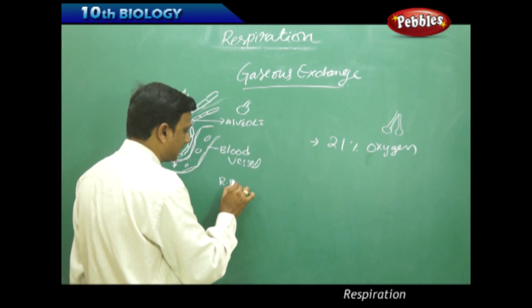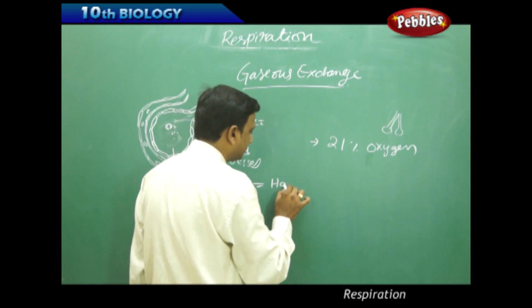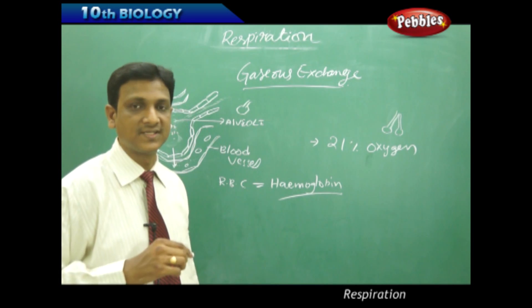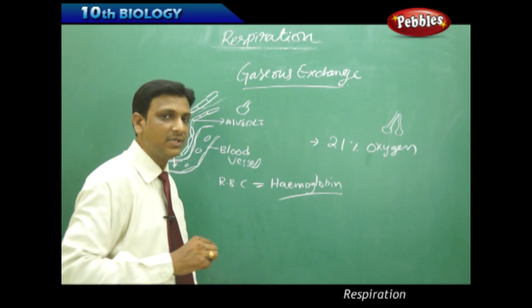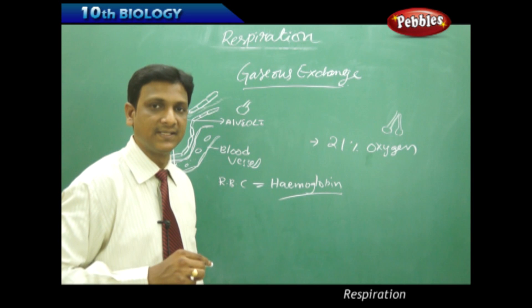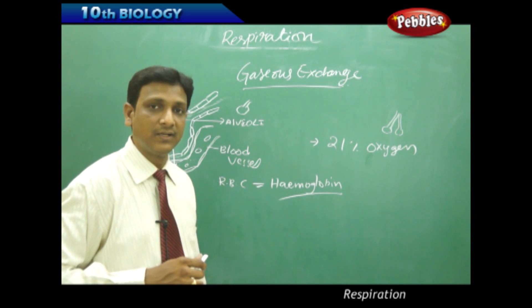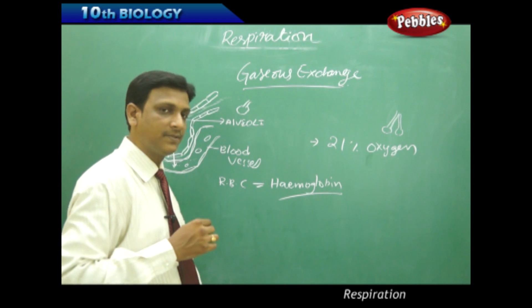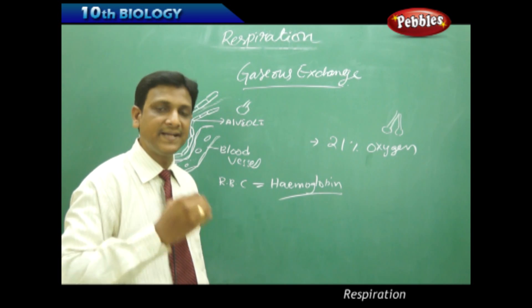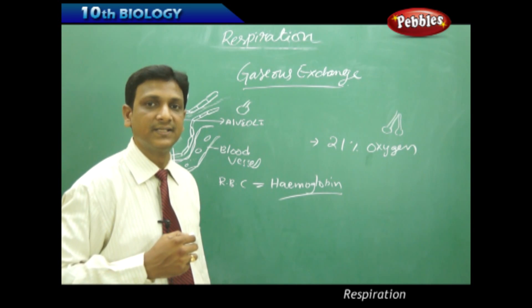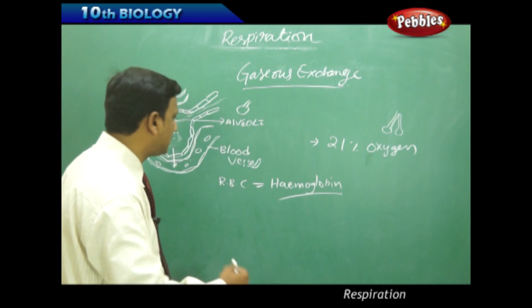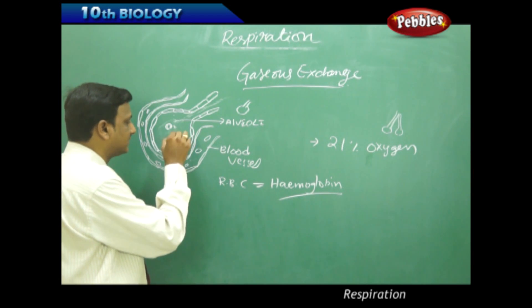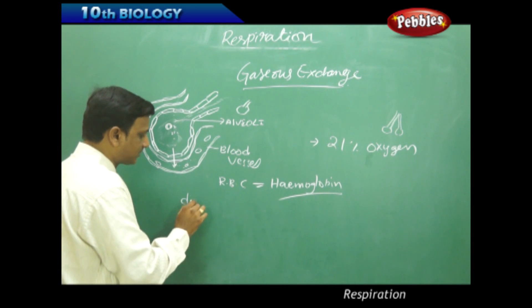The red blood cells contain a special pigment called hemoglobin, which has a strong affinity to bind with oxygen. Hemoglobin is a color pigment that gives blood its red color — just as chlorophyll is a green color pigment in plants. In animal blood, hemoglobin binds oxygen strongly and carries it to the cells. Whatever oxygen diffuses into the blood vessel from the alveoli, hemoglobin binds it, and oxygen enters the blood vessels by the process of diffusion.